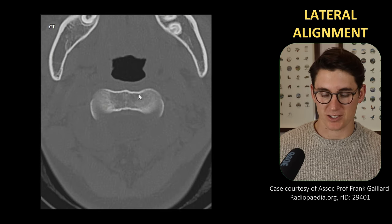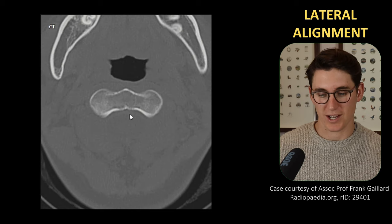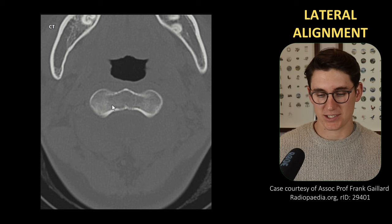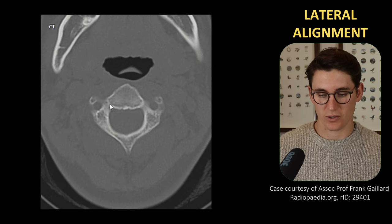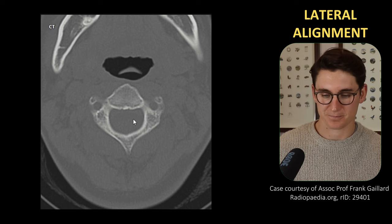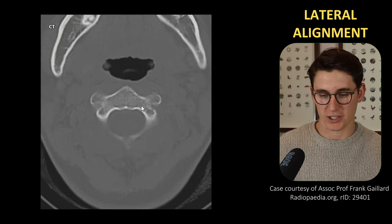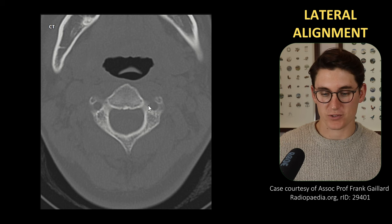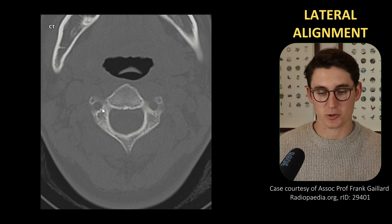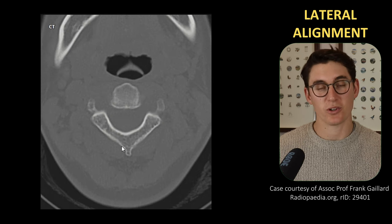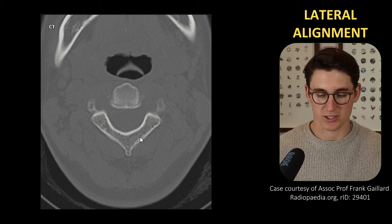Moving down, we're going to see the dens fan out into the body of C2, our axis, sitting below our atlas. As we head further down C2, we get this posterior arch and the spinal canal. C2 has a small vertebral body, still has transverse foramina allowing the vertebral arteries to flow up, and then lamina heading backwards to the spinous process — also a very small spinous process on C2.